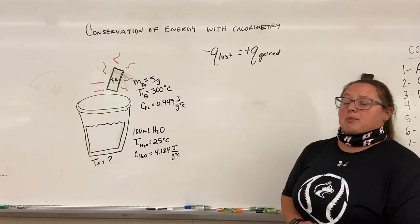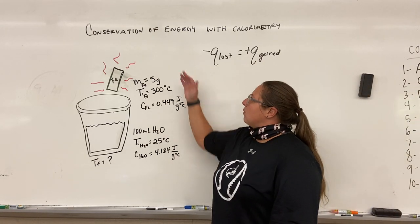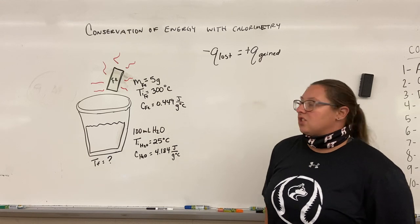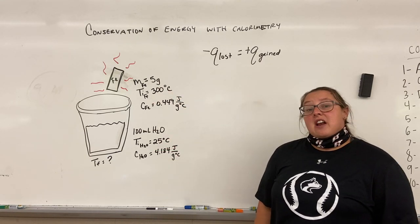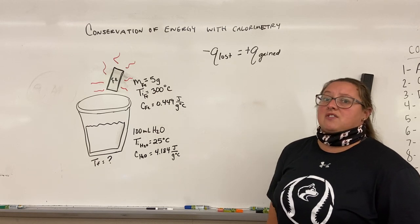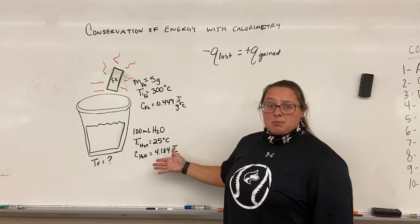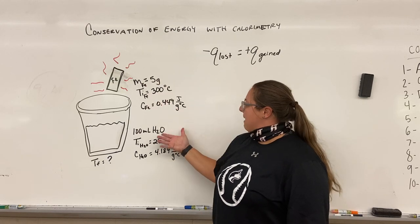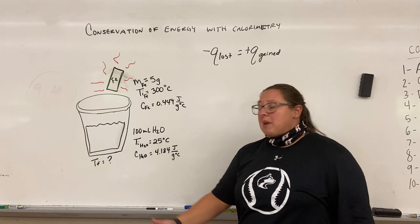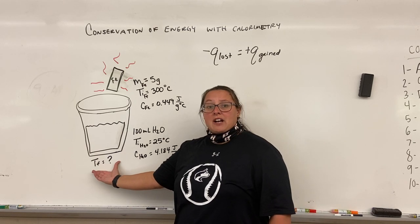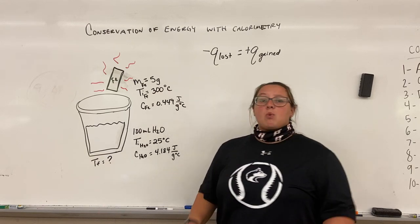When working conservation of energy problems, there will always be some unknown that you're trying to find. It could be an unknown initial temperature, an unknown mass, an unknown specific heat, or the unknown final temperature whenever you put two things together.